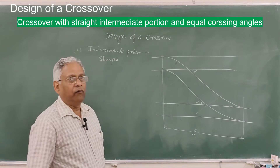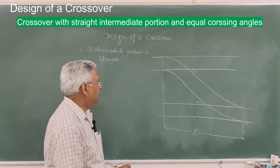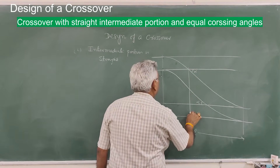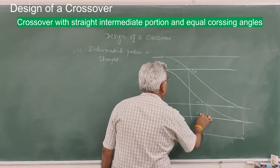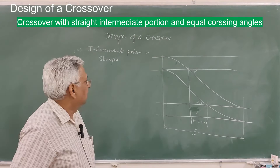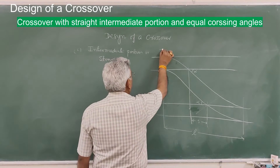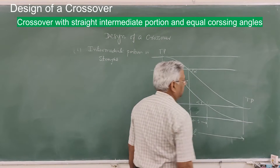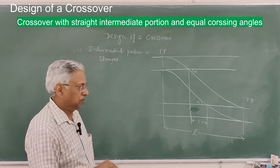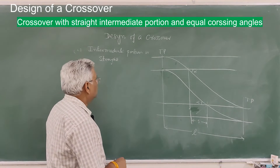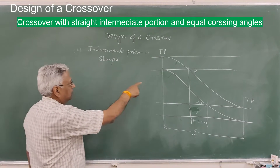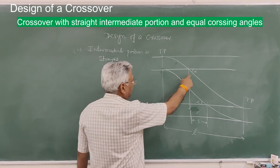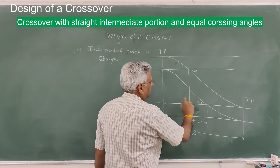L is the overall length of the crossover, and S is the horizontal projection of the straight intermediate length. One tangent point is here and another tangent point — the point switch — is here. In the first design, the intermediate portion is straight, so both crossing angles will be the same, alpha.